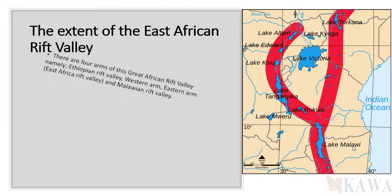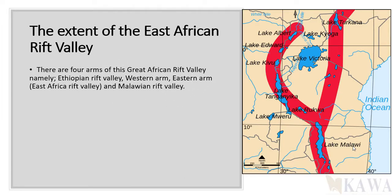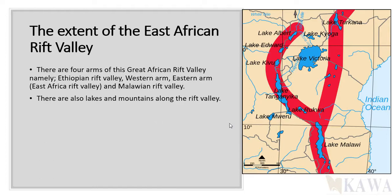There are four arms of the Great African Rift Valley: the Ethiopian Rift Valley up here, the Western Rift Valley, the Eastern Rift Valley, and the one which extends further down — that is called the Malawian Rift Valley.